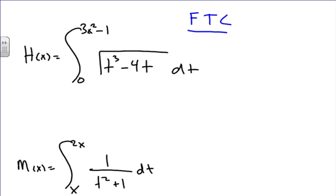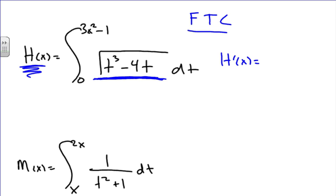For this first problem, we're going to find h prime of x. To figure this out, we realize that we have a function which we are integrating, and h of x equals the integral of this function. When we take the integral of a function, we find the antiderivative — and that antiderivative equals h of x.